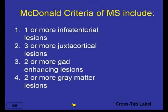This is a review of the McDonald criteria: one or more infratentorial lesions, three or more juxtacortical lesions, two or more gadolinium-enhancing lesions, or two or more gray matter lesions — which of those is one of the McDonald criteria?